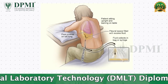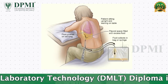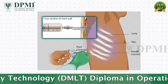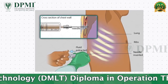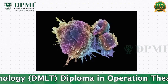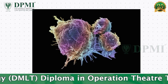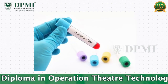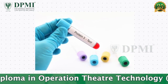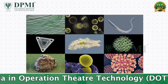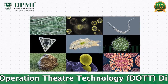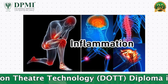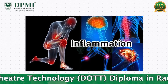A procedure called thoracentesis is used to get a sample of pleural fluid. The healthcare provider examines the sample to look for cancerous or malignant cells, other types of cells, levels of glucose, protein and other chemicals, as well as bacteria, fungi, viruses, and other germs that can cause infection or inflammation.